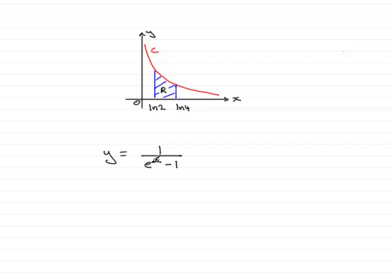Now, if x were 0, this would be e to the 0, which is 1, and 1 take away 1 would be 0. So, because you cannot divide by 0, y would tend to infinity when x tends to 0.